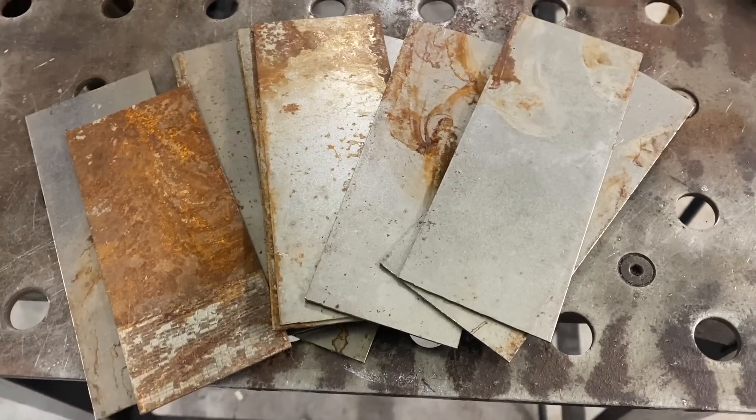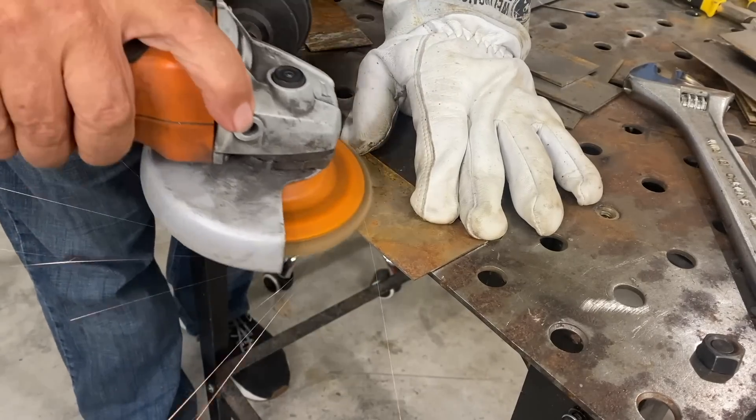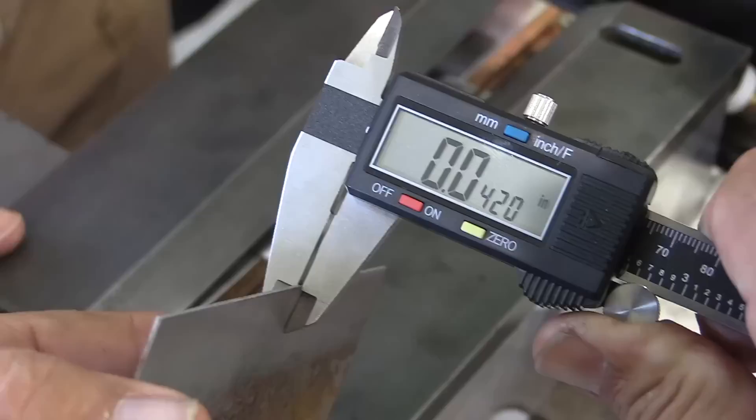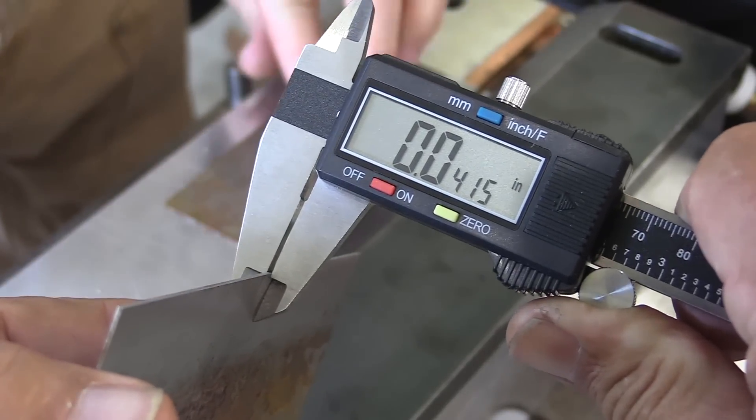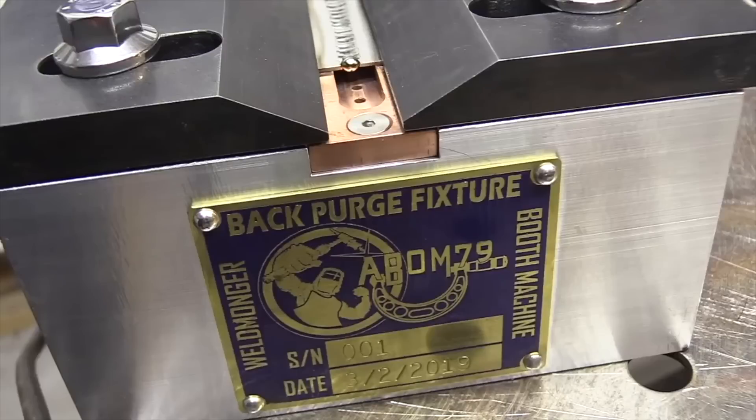I came across some rusty practice metal in the bottom of a bucket and I had an idea. I'll knock the rust off of it with a flap disc. It's just a little over 40 thousandths thick, about one millimeter. Perfect thickness for some practice for an aerospace test.